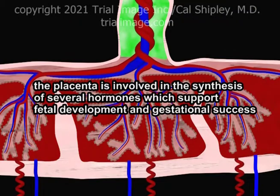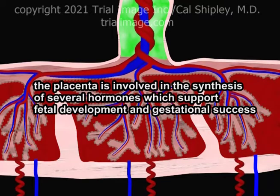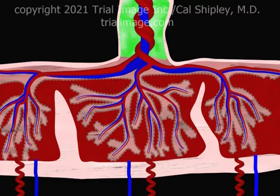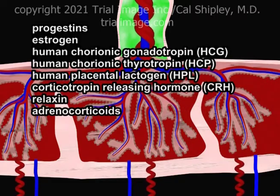In addition to its primary role as a vehicle for the exchange of oxygen, nutrients, and waste products between the mother and the fetus, the placenta plays an important role in the synthesis of several hormones which support fetal development and gestational success. Here is a partial list of hormones synthesized by the human placenta. For the most part, the placenta relies on substrates supplied by either the fetus or the mother to achieve hormone synthesis.